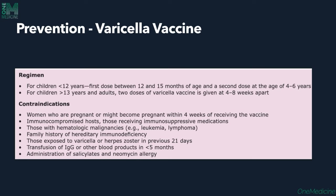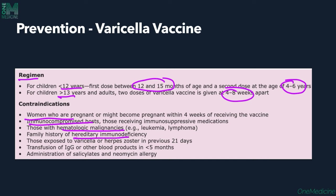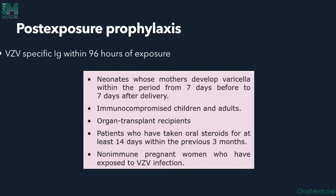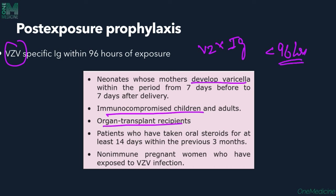Prevention is by Varicella vaccine. For children less than 12 years: first dose at 12–15 months, second dose at 4–6 years. For children more than 13 years: 2 doses 4–8 weeks apart. Contraindications include pregnant women, immunocompromised patients, hematologic malignancies, family history of hereditary immunodeficiency, recent exposure to Varicella Zoster within 21 days, recent transfusion of immunoglobulin, and those on salicylates or immunosuppressive therapy. Post-exposure prophylaxis with Varicella Zoster Virus immunoglobulin can be given within 96 hours of exposure.